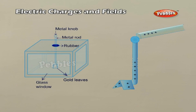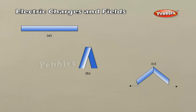A simple apparatus to detect charge on a body is the gold leaf electroscope. It consists of a vertical metal rod housed in a box with two thin gold leaves attached to its bottom end. When a charged object touches the metal knob at the top of the rod, the charge flows onto the leaves and they diverge. To understand how the apparatus works, fold white paper strips into halves, open the strip and iron it with a mountain fold up. Hold the strip by pinching it at the fold — the two halves move apart, showing that the strip has acquired charge on ironing.